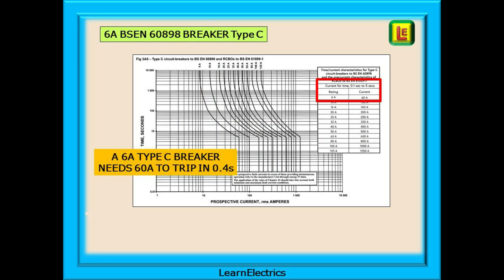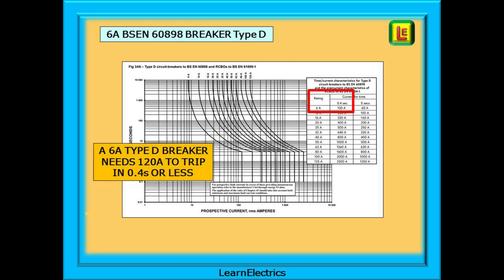On page 418 it's a 6 amp Type C breaker and you will come across these in many installations. Their response time is slower than the previous example. Looking at the table we note that a 6 amp Type C breaker needs 60 amps to reach the 0.4 second goal. And now the Type D 6 amp breaker as shown on page 419. Again consult the top right table and we find that this device will achieve 0.4 seconds disconnection time when 120 amps of fault current flows.